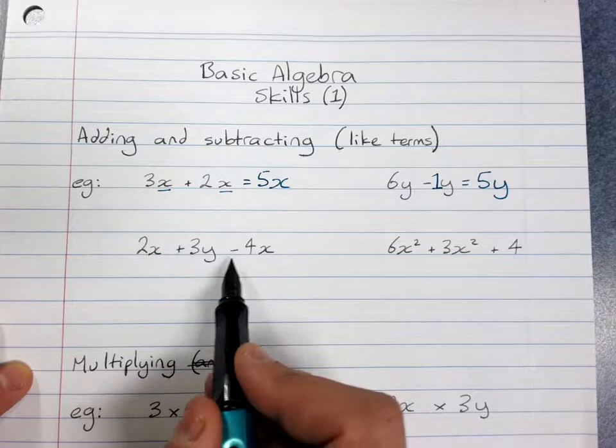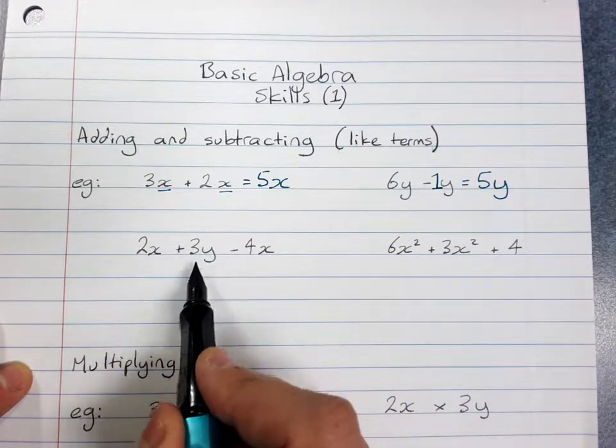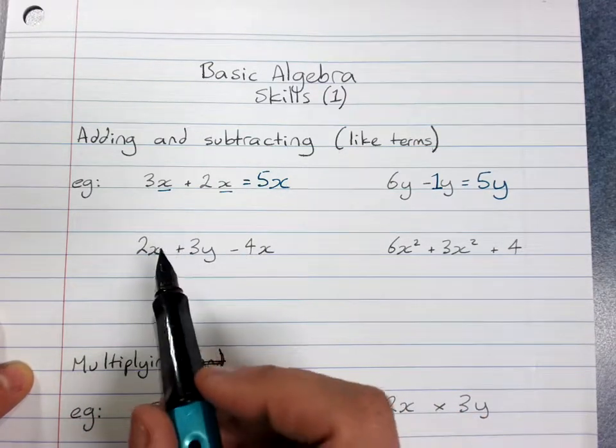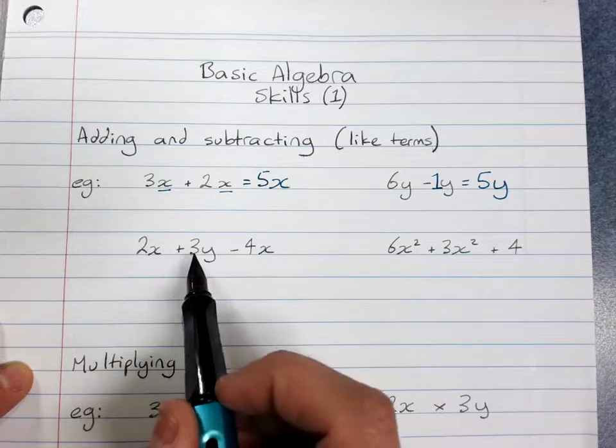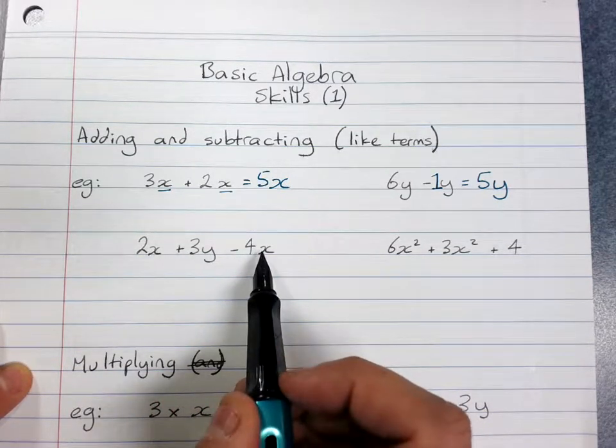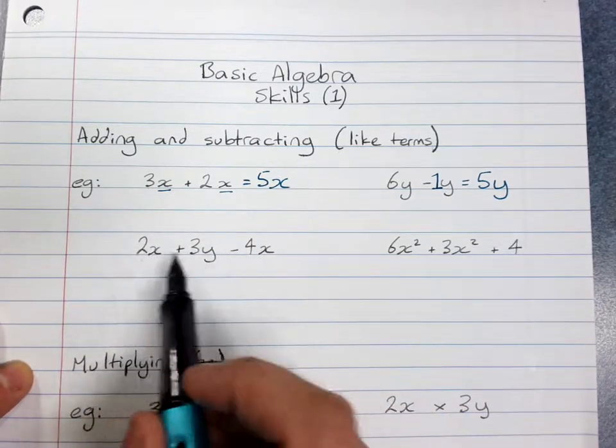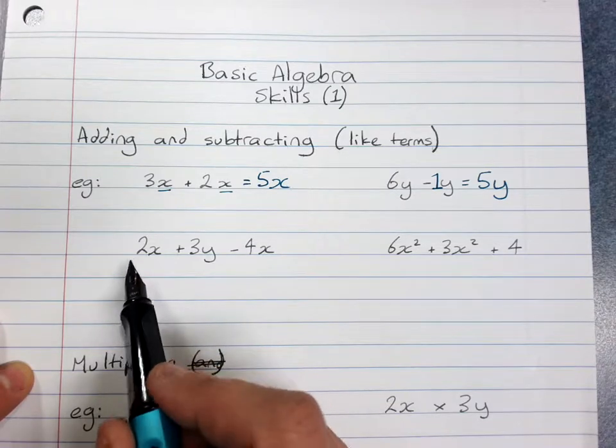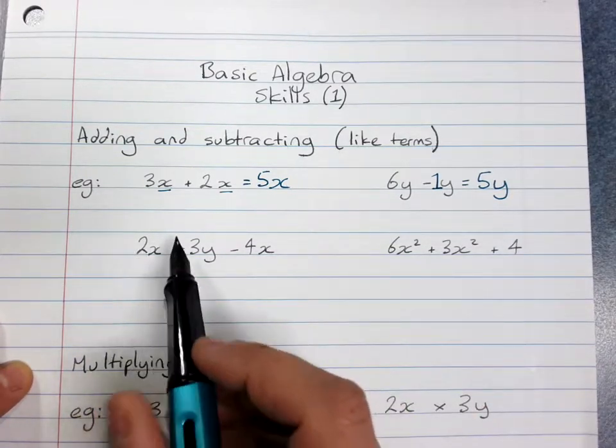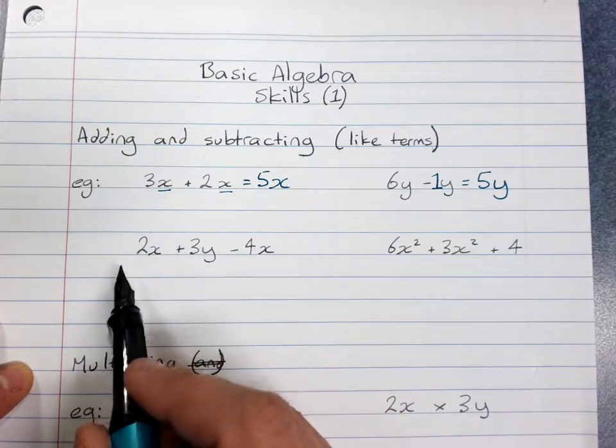Now, sometimes they give us harder ones where there's two different things, x and y. So in that case, you've got to say, this is like saying I've got 2 pens plus 3 pencils and someone took away 4 pens. Now, that's not very logical, because you'll end up with negative pens. But you can't add pens and pencils. They're two different things. So you're just going to say, I'll end up with this many pens and this many pencils. I'll end up with this many x and this many y, because x and y are not like terms.